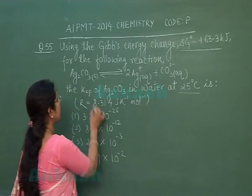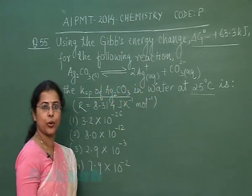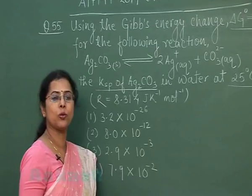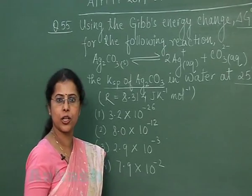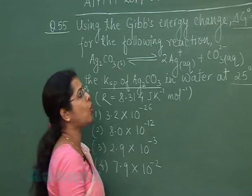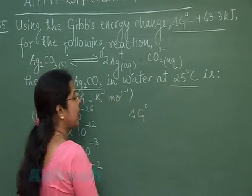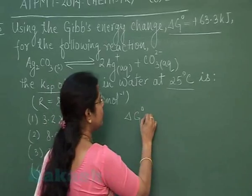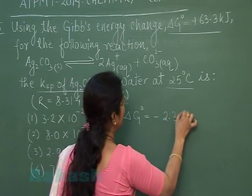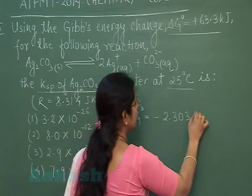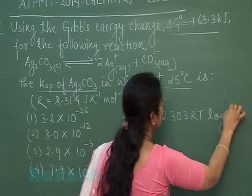In this question we have to find out the solubility product, and as you know, the solubility product is an equilibrium constant. For any equilibrium constant, the relationship between ΔG° and equilibrium constant is ΔG° = −2.303 RT log K.